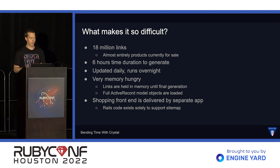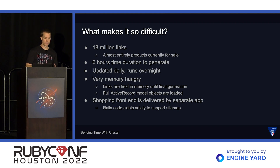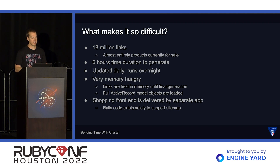So what makes that so difficult for us? Well, we generate over 18 million links, almost all of which are products currently for sale. This process takes about six hours to run on the existing Ruby code. And because we are adding new products every day to our site, we have to update our sitemaps daily. Because this takes so long, we have to run it overnight — that's the only time it will work in our infrastructure. Additionally, the process is very memory-hungry: the tool we use for generation actually accumulates all the links in an array until the end of processing, and that's when it generates all the sitemaps and clears everything out of memory.